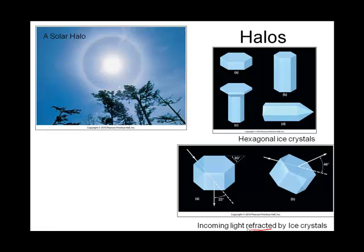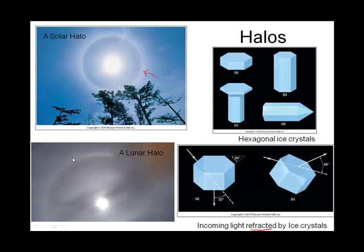Here is a picture of a halo around the sun — can you see it right there? 22 degrees. And this is a picture of a halo around the moon, and it's kind of fainter. What's causing it is these upper-level clouds that have these ice crystals in them.